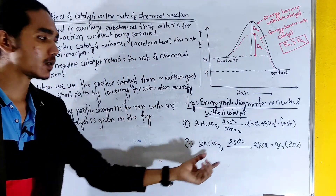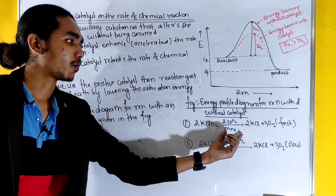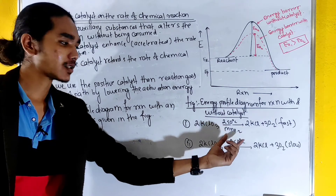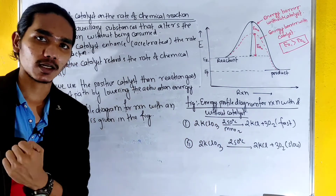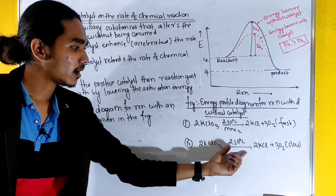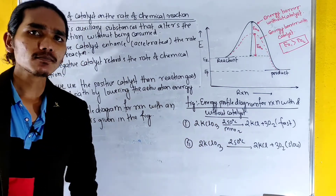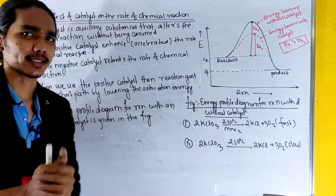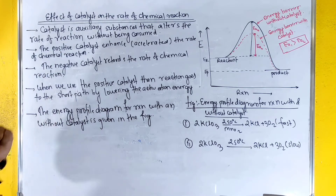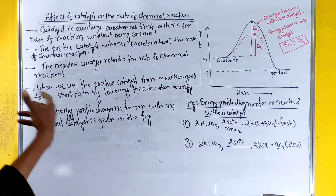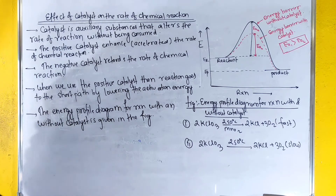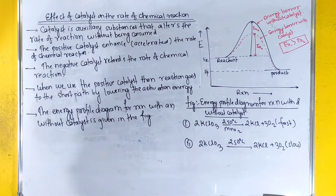We will get positive catalysts and negative catalysts. In a normal reaction without a catalyst, it will be slow. A catalyst is an auxiliary substance that alters the rate of reaction without being consumed.